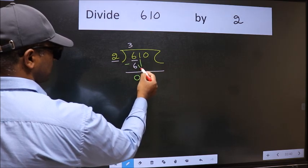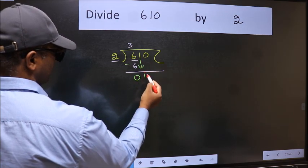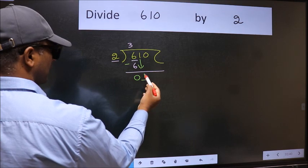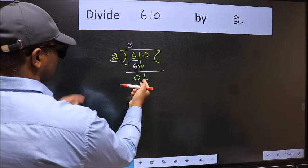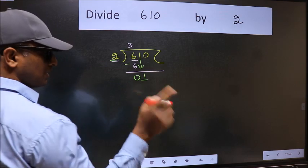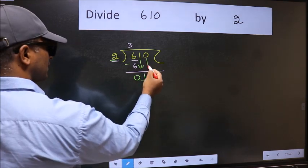After this, bring down the beside number. So 1 down. Now here we have 1 and here 2. 1 is smaller than 2. So we should bring down the second number.